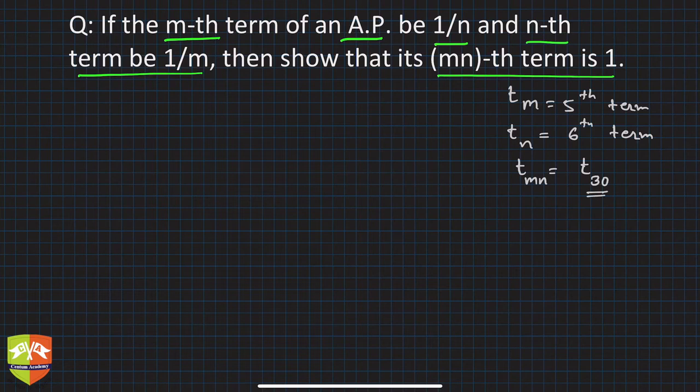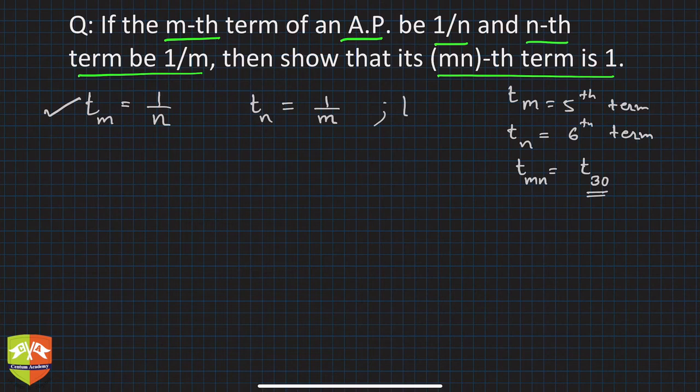Understood? So this is what it means. Don't get confused by the use of these letters. Now, once you understand the problem, what they are saying is t_m is equal to 1/n, right? So m-th term is t_m and that is equal to 1/n, and t_n is 1/m. And you have to find out t_mn. In fact, t_mn is equal to 1. You have to show this. Let's try and solve this problem.